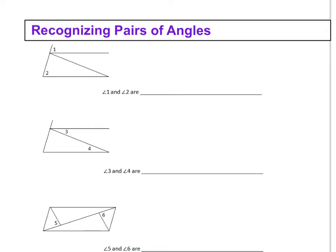Just a little piece of advice: the first thing you want to try to find is the transversal. That's going to help us identify what type of angles we have, especially when there are more lines than we might need. To find the transversal, this is going to be the line that connects your two angles — the two angles that they have identified in the figure.